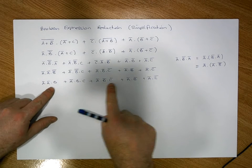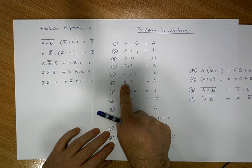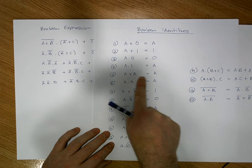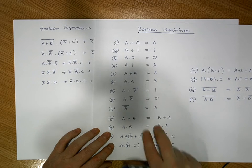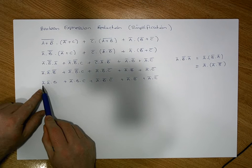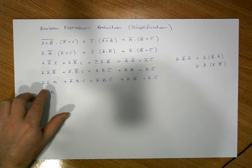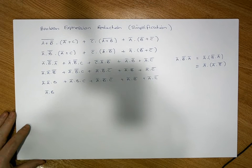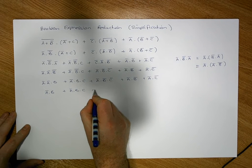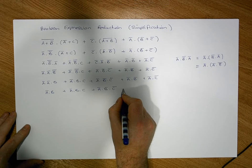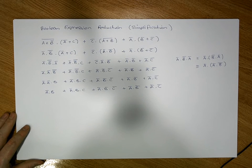Now we look within our terms to see if we can simplify further. An important identity: when you have a term ANDed with itself, that's simply the term itself — a AND a = a. Here we have a-bar AND a-bar, which is just a-bar. So this becomes a-bar AND b. The other terms remain: a-bar AND b AND c, OR a-bar AND b-bar AND c-bar, OR a-bar AND b-bar, OR a-bar AND c-bar.